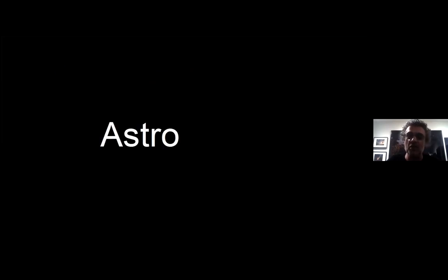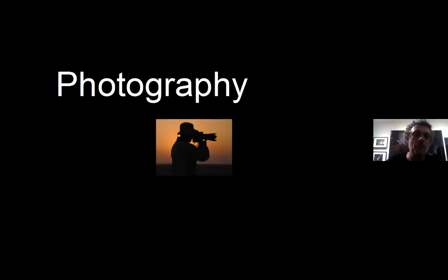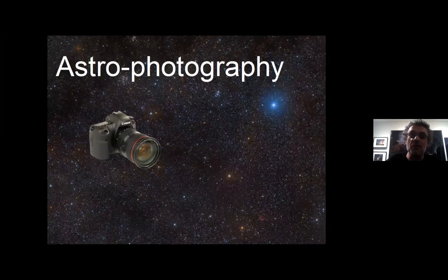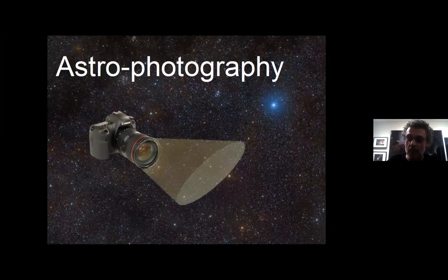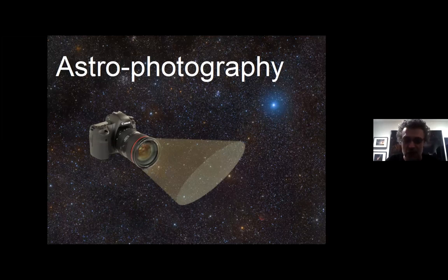So how can we see what's there? There's this thing called astrophotography — that's what we do to see what's up there. 'Astro' means stars, 'photography' means taking pictures, so astrophotography is basically taking pictures of the stars.